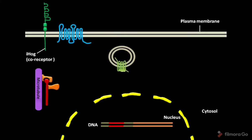It acts as co-receptor for Hedgehog protein. In mammals, the IHOG proteins are BOC and CDO.